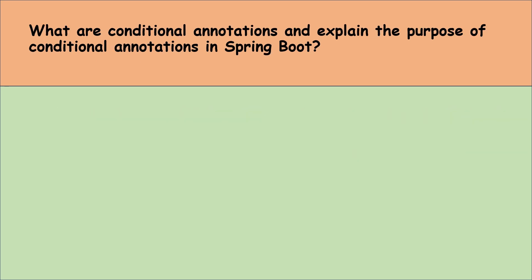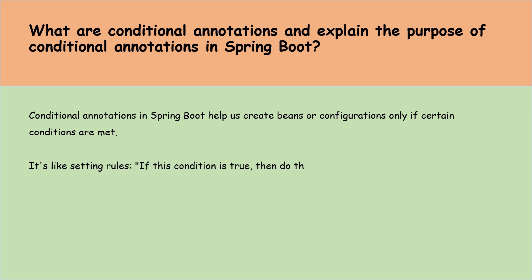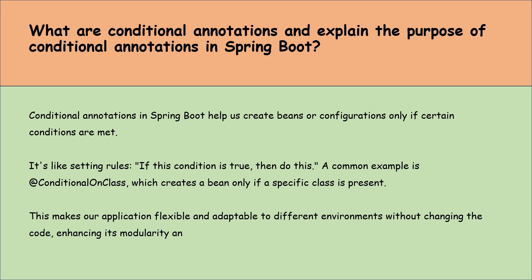What are conditional annotations and what is their purpose in Spring Boot? Conditional annotations in Spring Boot help us create beans or configurations only if certain conditions are met — it's like setting rules: if this condition is true, then do this. A common example is the @ConditionalOnClass annotation, which creates a bean only if a specific class is present. This makes our application flexible and adaptable to different environments without changing the code, enhancing modularity and efficiency.